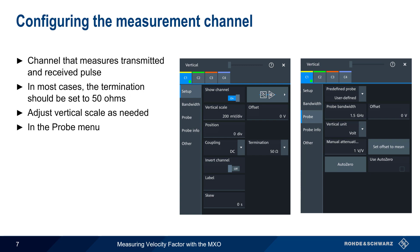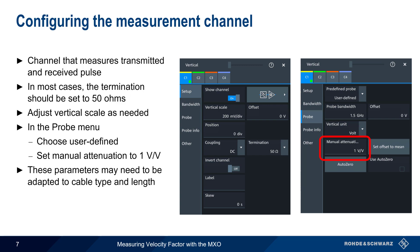Next in the probe menu, set the probe type to user defined, and be sure that manual attenuation is set to 1 volt per volt. These settings will work for most common coaxial cable types and lengths, but some modification may be needed in some cases.